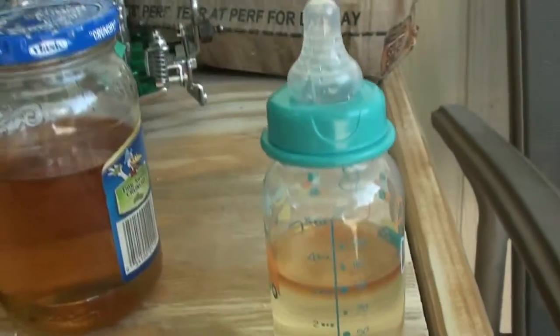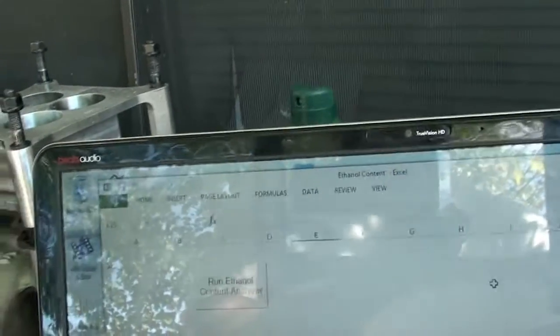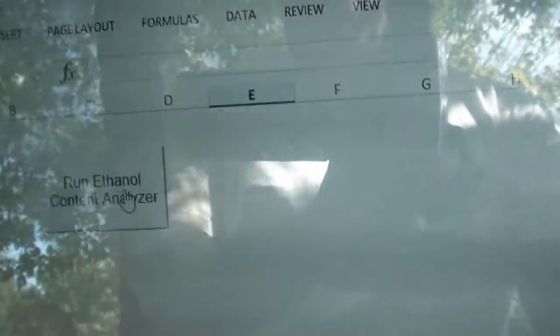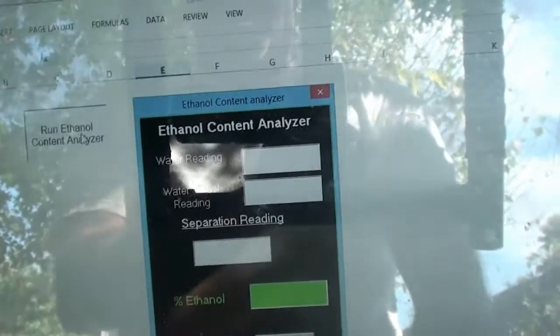Then there's a program you can download. I don't recall exactly where I got it from, but it's an Excel spreadsheet called Ethanol Content. Just start it up. You download it, start it up... I really can't see what I'm doing... right there we go. Click on this, then it opens up this little program.